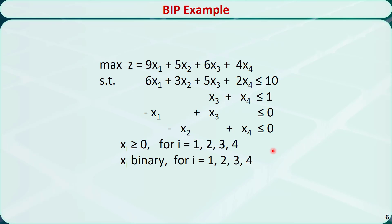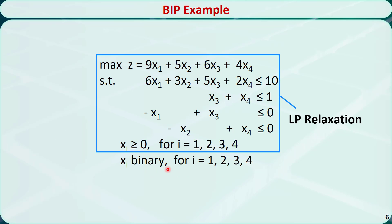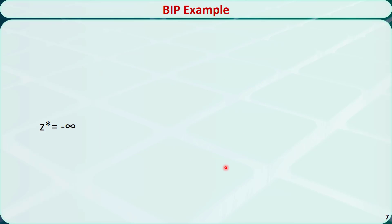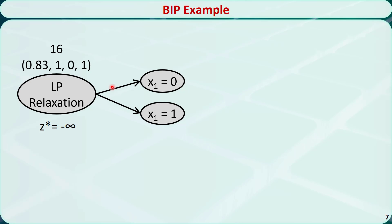Let's check this binary integer programming example. It is a maximization problem with four variables x1 through x4. They are all required to be greater than or equal to 0, and they are all required to be binary — that means either 0 or 1. The linear programming relaxation is a problem without the binary restrictions. We initialize z* to be negative infinity, then solve the linear programming relaxation using the simplex method. The problem is unfathomed since x1 is still not 0 or 1. We call x1 the branch variable, formulate two subproblems, and solve them. One branch is fathomed because all variables are binary, so we update z*.